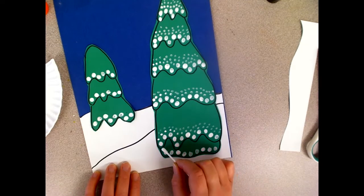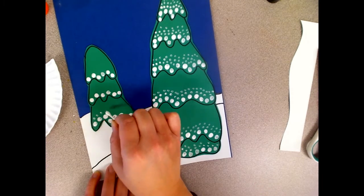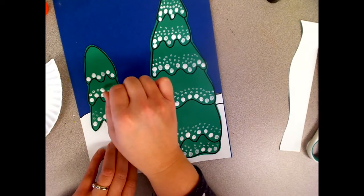It'll make smaller dots that way and you can make several rows of smaller dots so that the snow looks like it's heavier at the bottom of your branches.